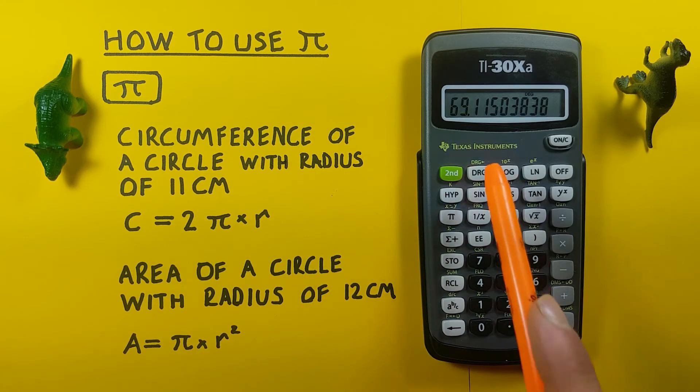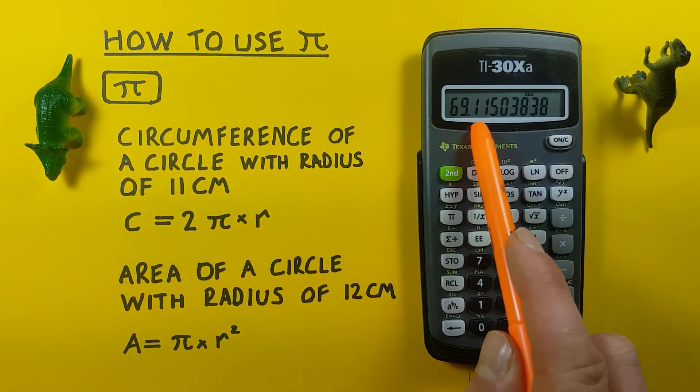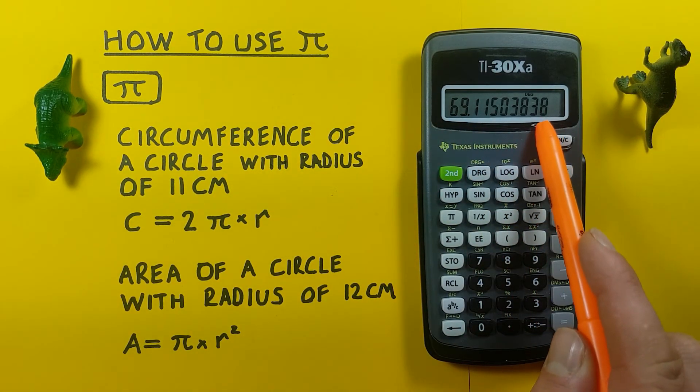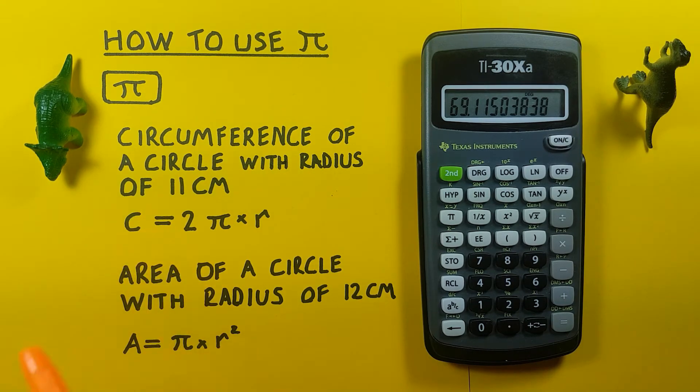And press equals. We see we get a circumference of 69.115 and so on. So that's our circumference for this circle.